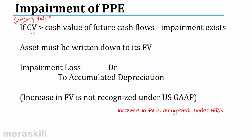When do we say there is impairment? We say there is impairment when the cash value of the future cash flows is less than the carrying value. Say I bought a machine in year 1. I am now in year 3 and I expect the machine to be there till year 5. The carrying value is cost of asset less accumulated depreciation. Let's say the carrying value of this asset happens to be $8,000.